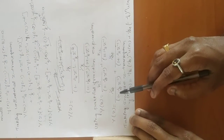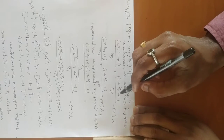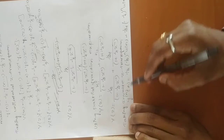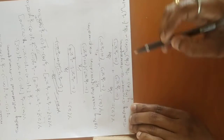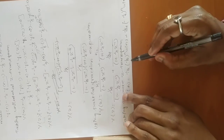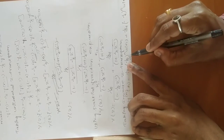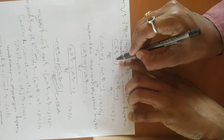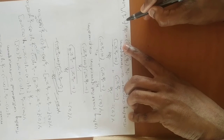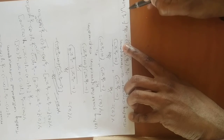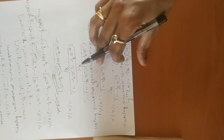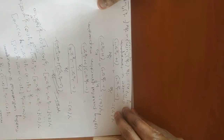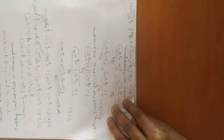Finally, take the inverse unilateral Z-transform. The term K₁/(1 - (1/2)z⁻¹) is in the form 1/(1 - α), giving (1/12)·(1/2)ⁿ·u(n). The term K₂/(1 + (1/4)z⁻¹) is in the form 1/(1 + α), giving (1/24)·(-1/4)ⁿ·u(n). This concludes the Z-transform topic and end of Module 3. Thank you.